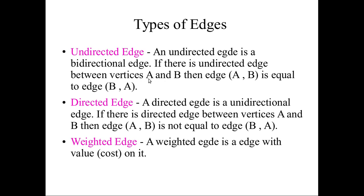Every vertex A,B and B,A is equal. For the directed graph, there is an arrow mark. We can use A to B. If B to A and B,A are equal, the two are equal in the directed graph.